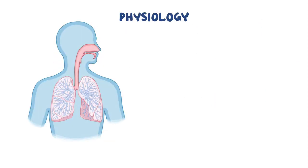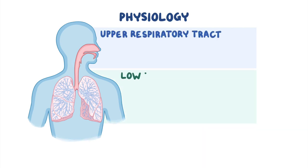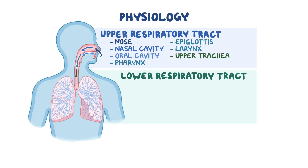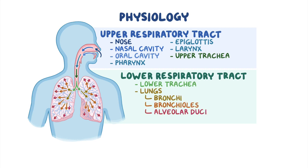Let's quickly review the respiratory tract, which can be divided into two regions: the upper respiratory tract and lower respiratory tract. The upper respiratory tract includes the nose, nasal cavity, the oral cavity, pharynx, epiglottis, larynx, and the upper part of the trachea, while the lower respiratory tract includes the lower part of the trachea and the lungs containing the bronchi, then the bronchioles, onto the alveolar ducts, and finally into the alveoli.